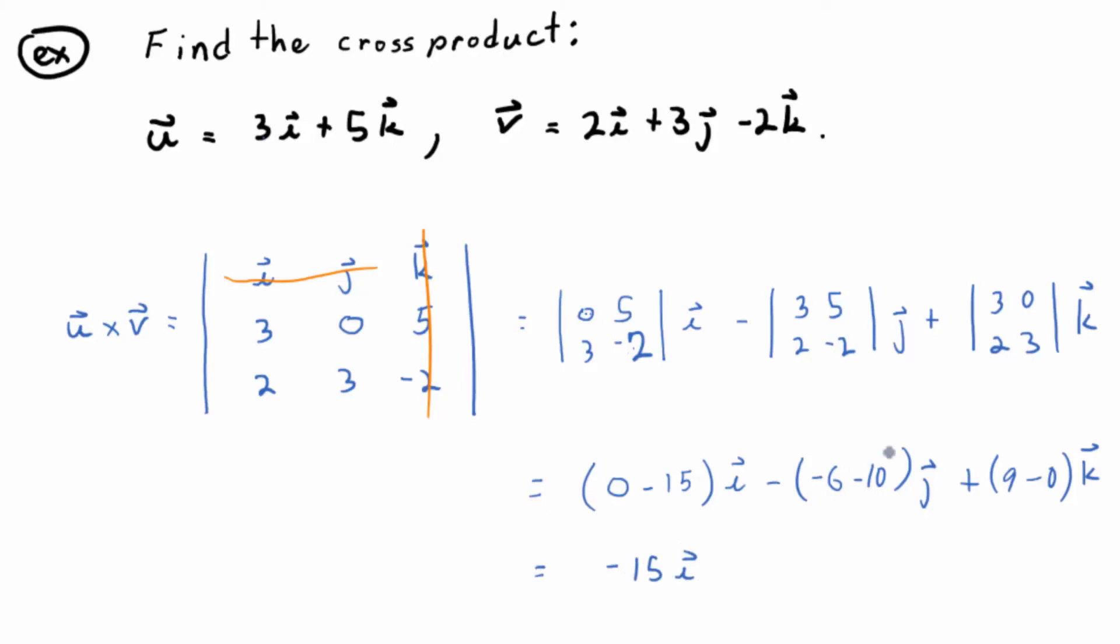All right, so then clean it up. What do we have? Negative 15i. What's this going to be after the smoke settles? Plus 16j, because you're going to have a minus 16 inside, but minus a minus 16. And then plus 9k. Does everybody believe that?